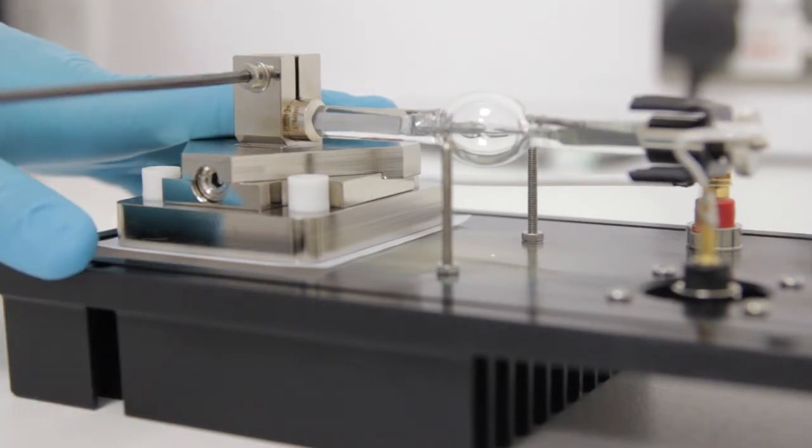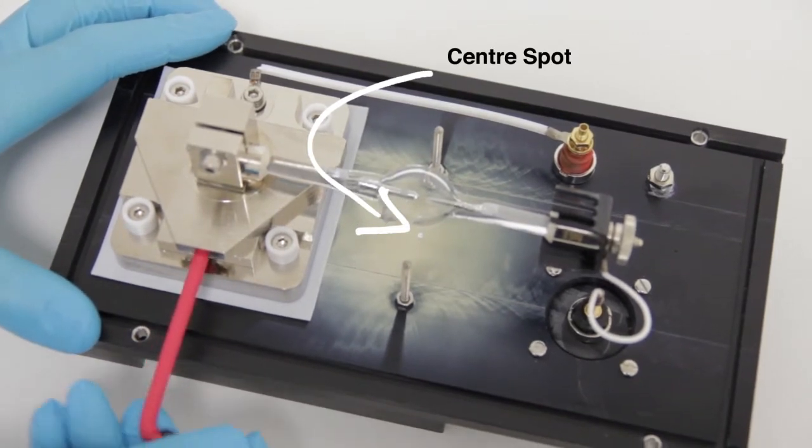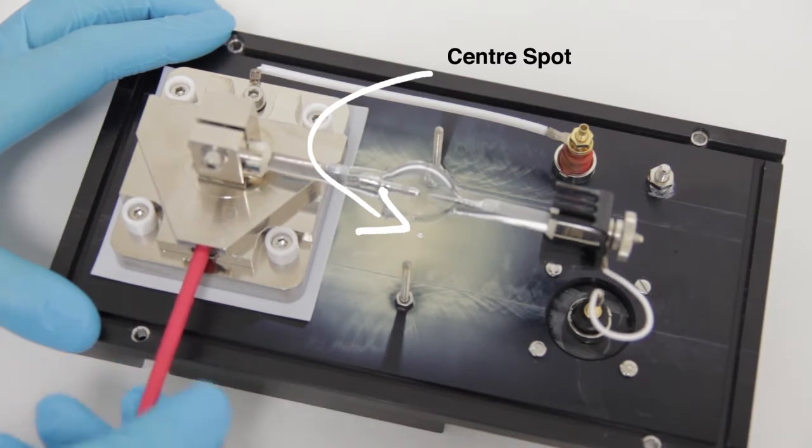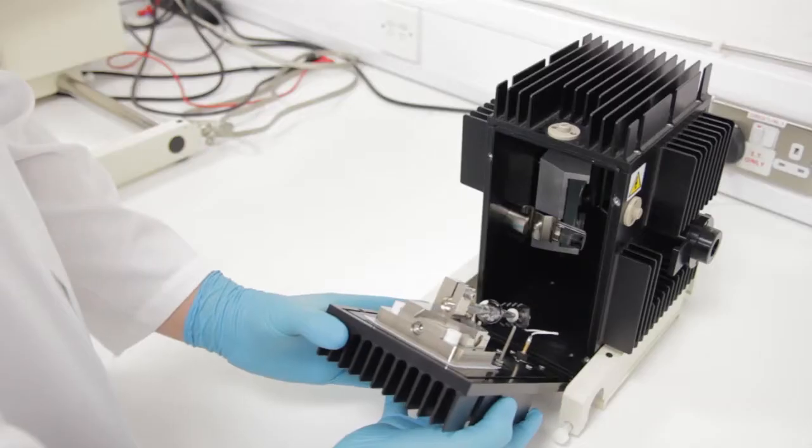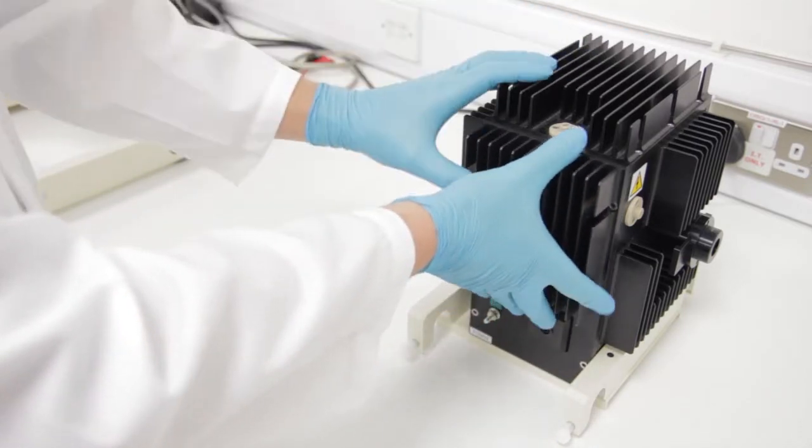Adjust the lamp's horizontal position using the horizontal alignment port such that the gap between the electrodes aligns with the center spot on the lamp housing back plate. Refit the back plate to the lamp housing and secure it with the four screws.